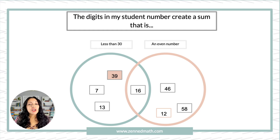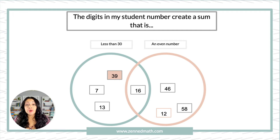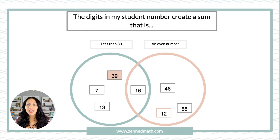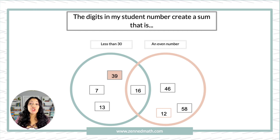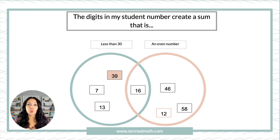I want to talk about those highlighted pieces that stand out. Let's talk about that 39 — some students are going to put a post-it in the wrong spot. That number is not less than 30, so it wouldn't go there. Let the students put it in the spot — don't interfere, don't get in their way.